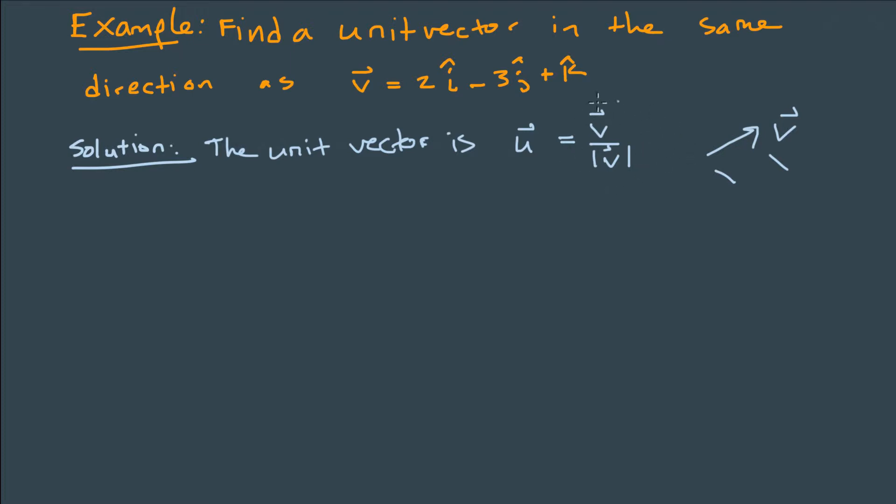So first we need to find the magnitude of v. So magnitude of v is given by the square root of the components squared and then added together. So we'll do 2 squared plus negative 3 squared plus 1 squared.